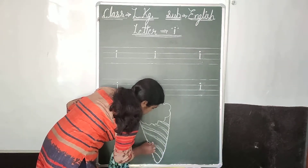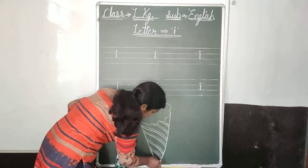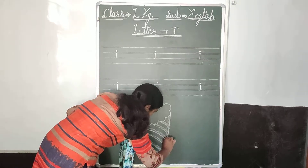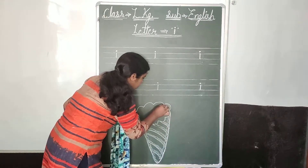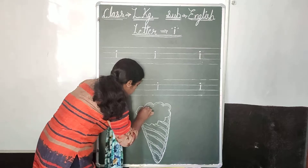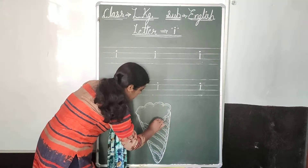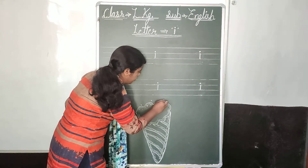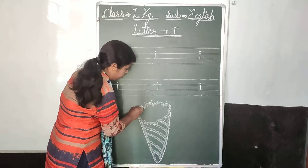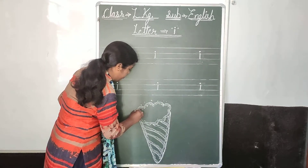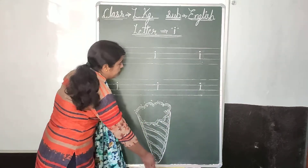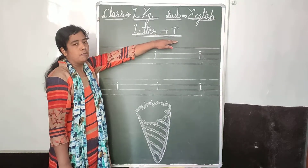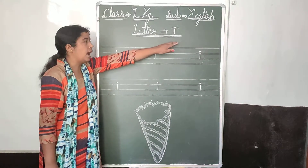You can write down the note. Ice cream means ice cream. I for ice cream. Ice cream means ice cream.